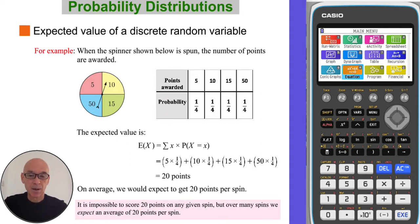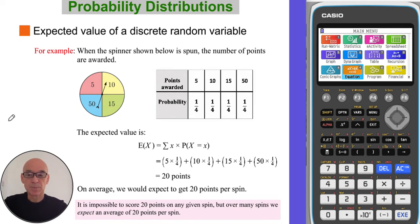However, of course, it's impossible to get 20 points on any given spin, but what it means is over a long time we would expect the average number of points to be 20 points per spin.